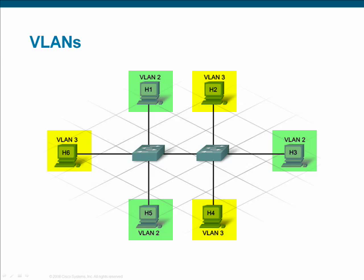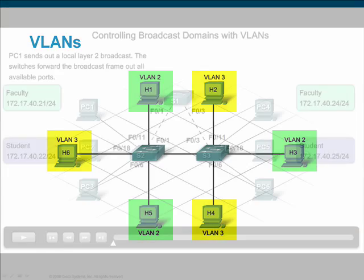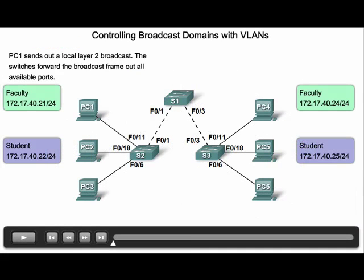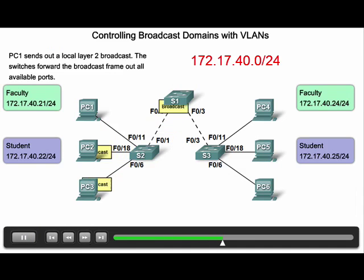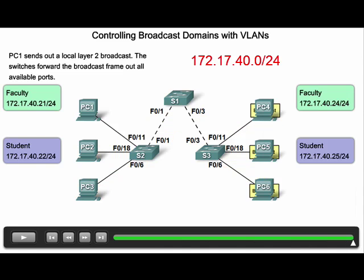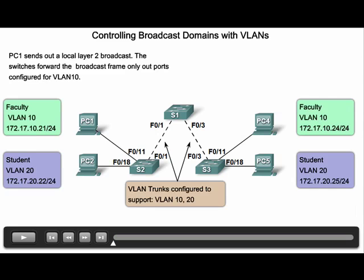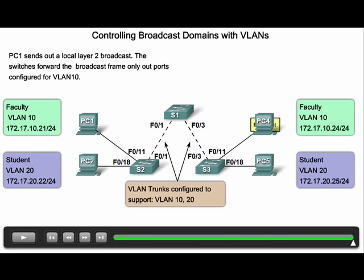A simple VLAN implementation is displayed in this diagram. There are two groups of users in this graphic: faculty and student. Notice that when all PCs are under the same IP network and PC1 sends a broadcast, all devices receive and must process that broadcast. One benefit of VLAN implementation is broadcast containment — each VLAN is its own broadcast domain. After VLAN implementation, broadcasts sent by PC1, which is now on VLAN 10, only reach other devices on VLAN 10. No longer do devices on the student or any other VLAN receive or process broadcasts from the faculty VLAN.